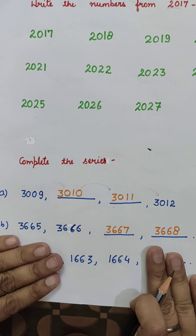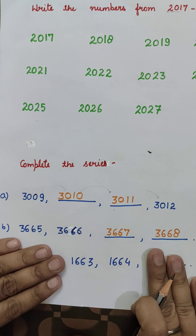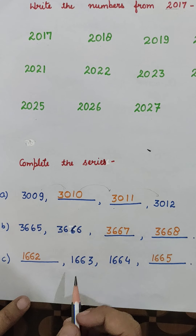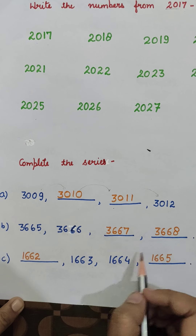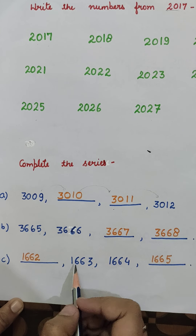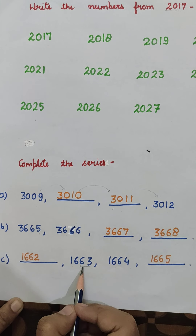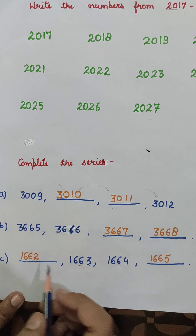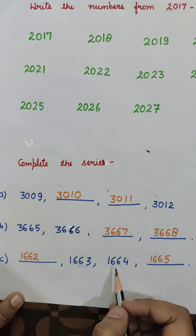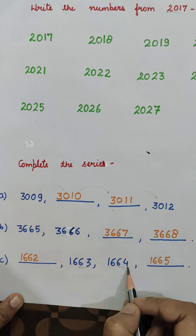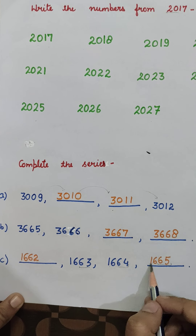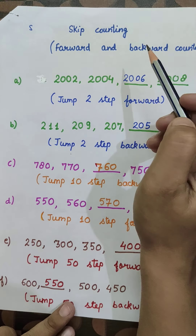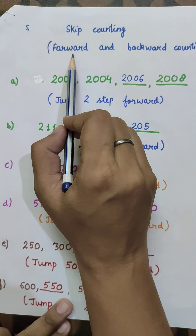The third question: we are given 1663 and 1664, with two blanks — one before and one after. Before 1663, what comes? 1662. Then 1663, 1664, and after 1664 what comes? 1665. So the answers are 1662 and 1665.